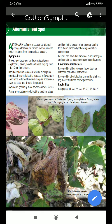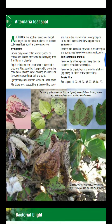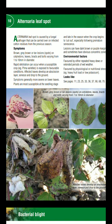Symptoms of Alternaria leaf spot include brown, gray-brown, and tan lesion spots on the cotyledons, leaves, bracts, and bolls, varying from 1 to 10 mm in diameter. Rapid defoliation can occur when the crop is susceptible. Affected leaves develop an abscission layer, undergo senescence, and drop to the ground.